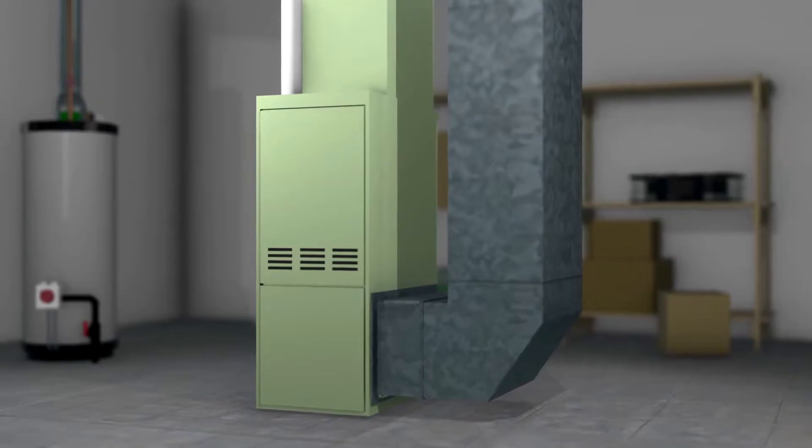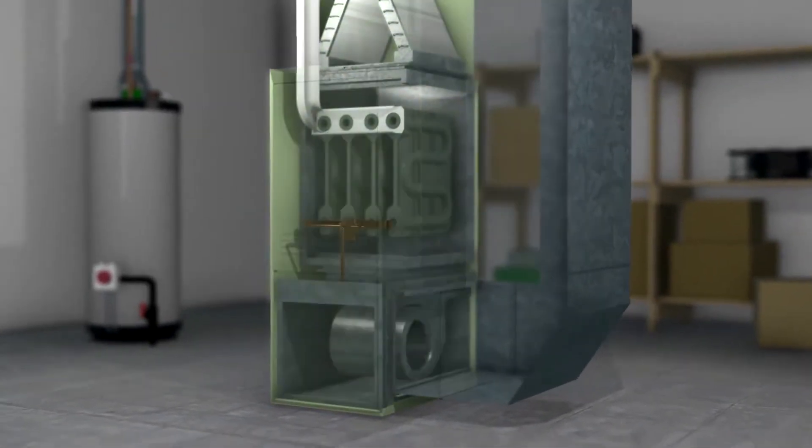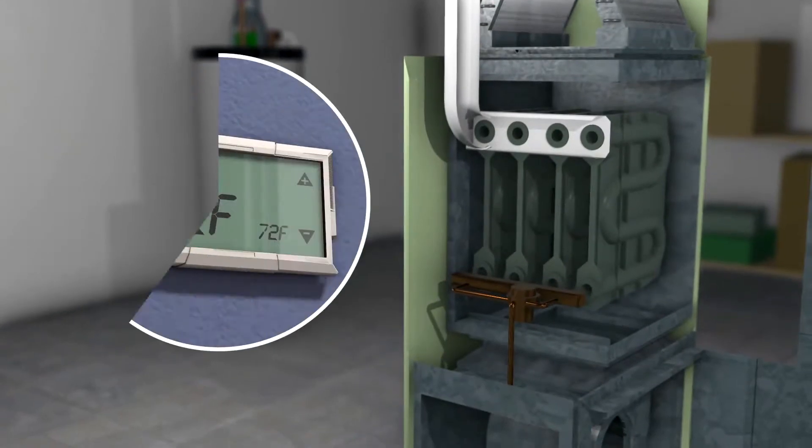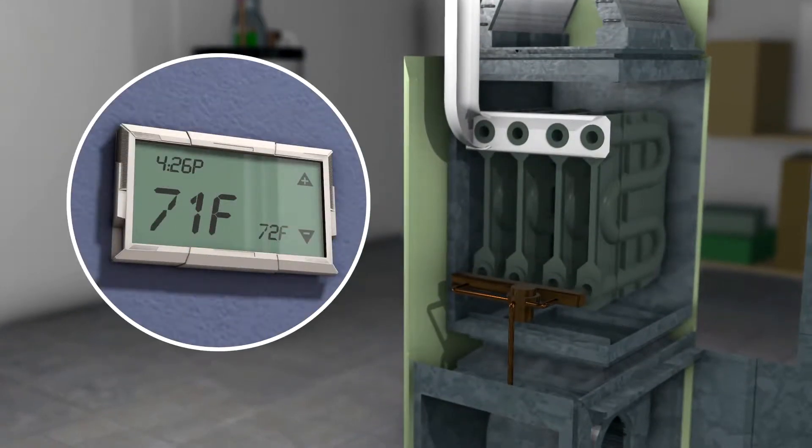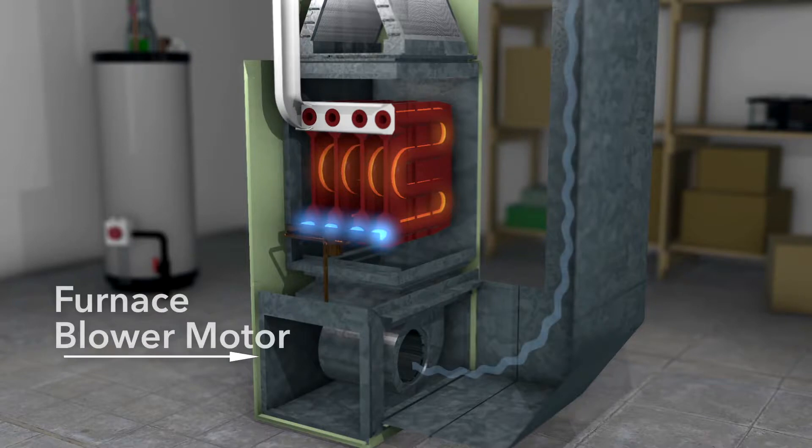Your furnace is one of the most important and complex systems in your home. Let's have a look inside to see how it works. When the thermostat signals the furnace to start, fuel is sent to the burners. Flames reaching temperatures of over 3,000 degrees heat up the heat exchanger. Next, the furnace blower motor sends air past the heat exchanger where it's heated.